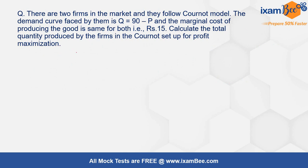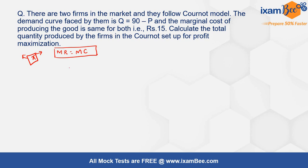To solve such questions, we derive the profit function for both firms and maximize profits. The condition required for profit maximization is that marginal revenue equals marginal cost. At this point, both firms are maximizing profits, and the corresponding quantities produced by each firm can be found. We are given the demand function Q = 90 − P, so the inverse demand function is P = 90 − Q.